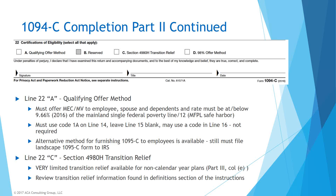When using code 1A, you leave line 15 blank and line 16 doesn't need a code either. There is an alternative method for furnishing 1095-C's to employees under the qualifying offer method, but when furnishing information to the IRS they still want it on the 1095-C forms, so you might as well just complete them. For Section 4980H transition relief, there is very limited relief available for the 2016 calendar year. Please read the instructions carefully — they've been expanded — and make sure you can certify what's required.